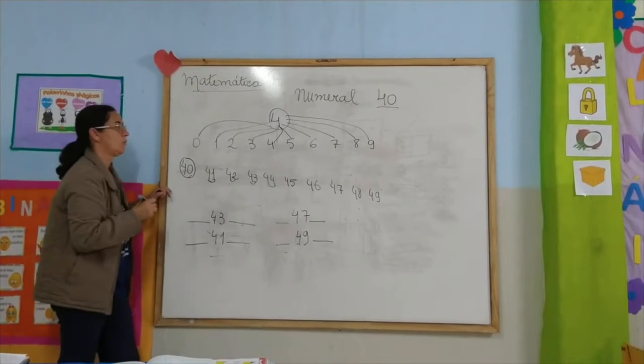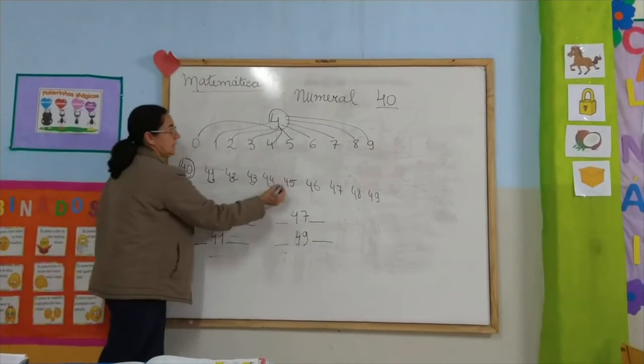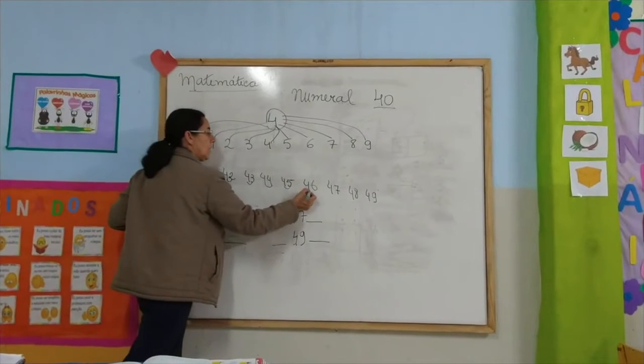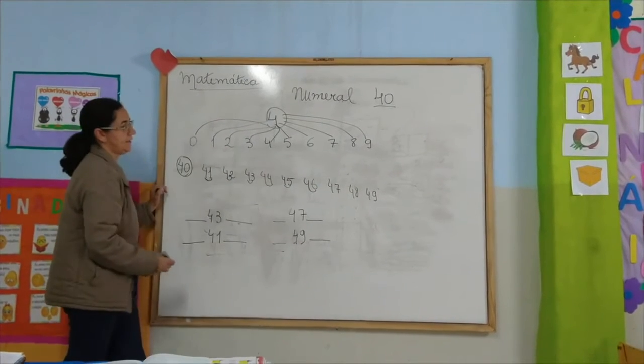40 and 4 is 44. 40 and 5 is 45. 40 and 6 is 46.